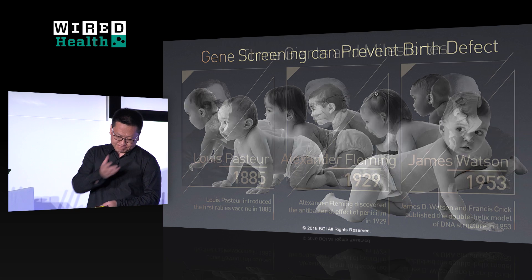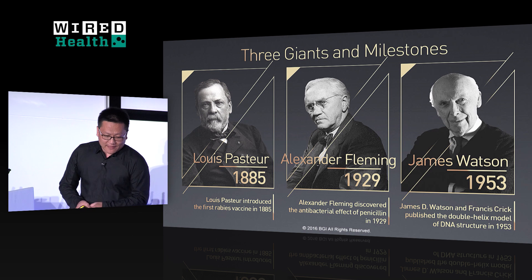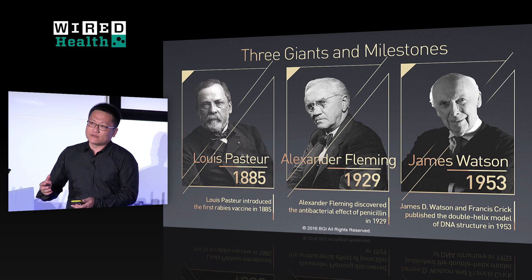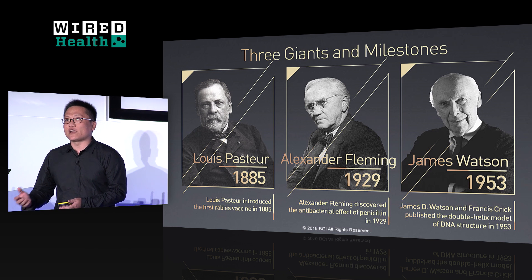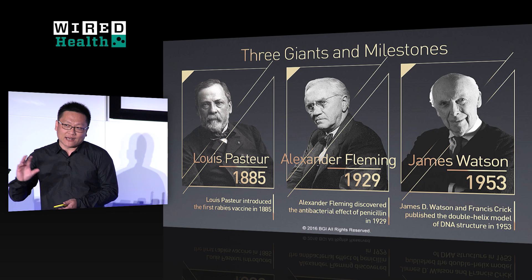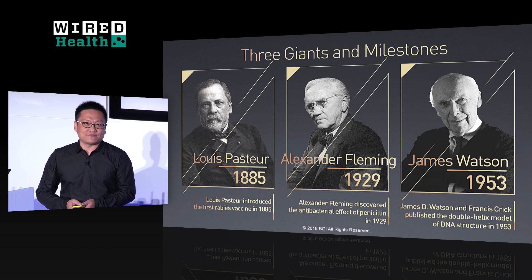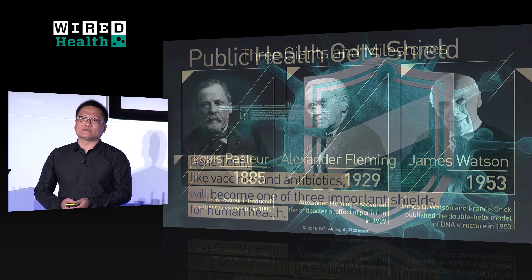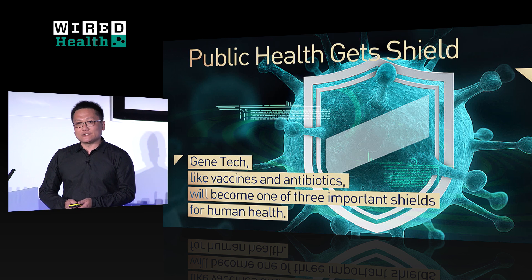How do we deal with it? Look at the milestones. In 1885, Pasteur invented the first vaccine. In 1929, Fleming discovered penicillin, the first antibiotic. And in 1953, James Watson and Crick found the double helix structure of DNA at Cambridge University. I believe gene technology, together with vaccines and antibiotics, will safeguard public health.